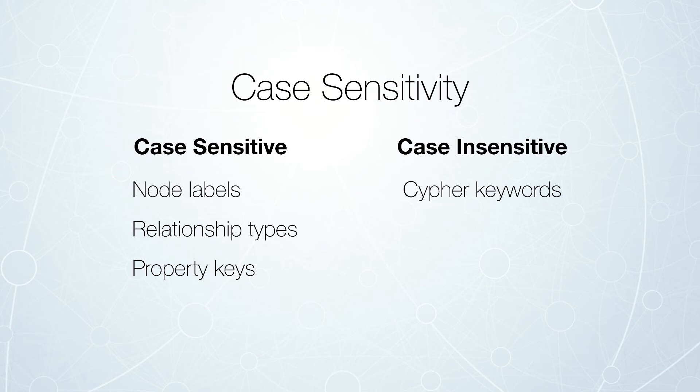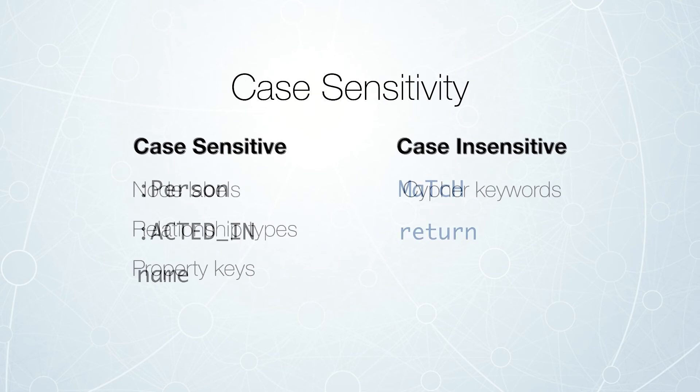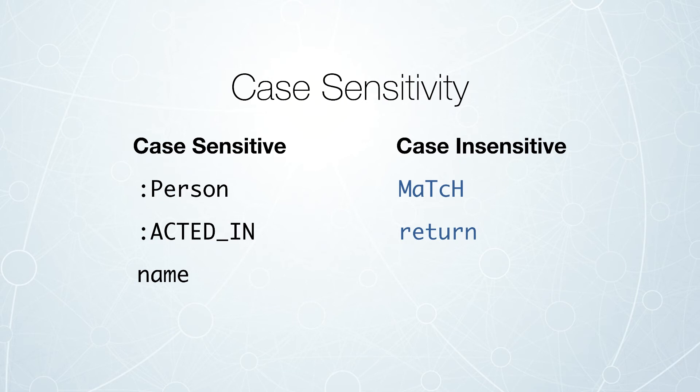We also have case insensitive parts, and those are the Cypher keywords. So you can see person, acted_in, and name are all case sensitive, with the appropriate preferred Cypher style shown. Case insensitive are the Cypher keywords such as MATCH and RETURN. We tend to capitalize those in our statements, but they are case insensitive.